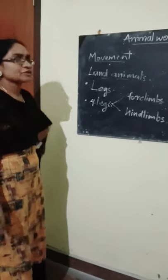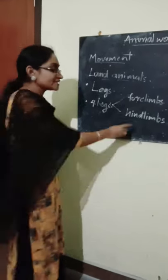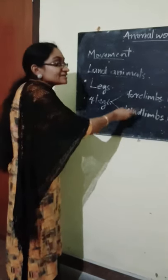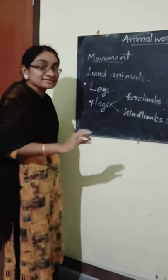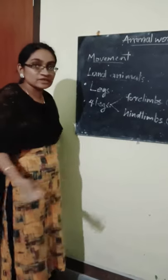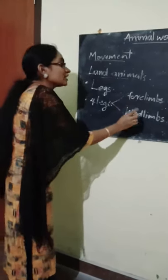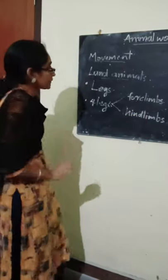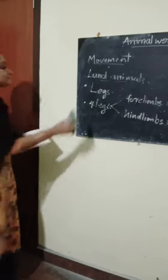For human beings, they walk on two legs, which are actually hind limbs. And the forelimbs are developed as hands, which we use for doing work. So they are walking through the two hind limbs. Another example is reptiles — let us look at the reptiles.